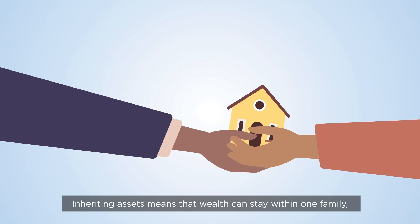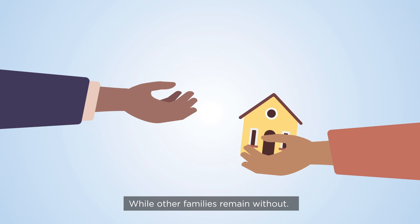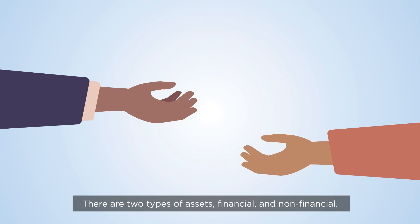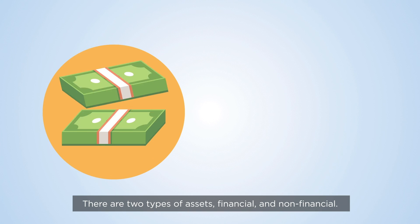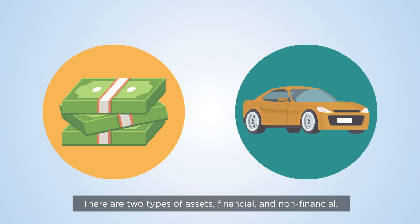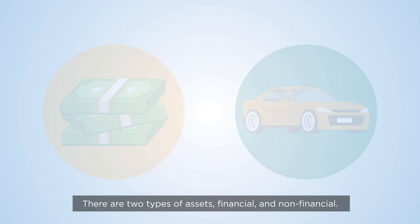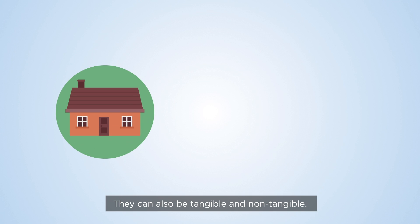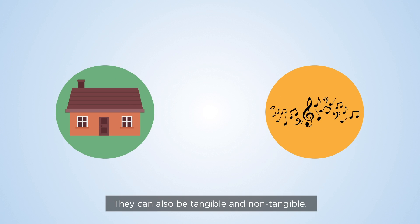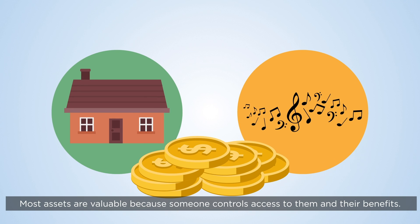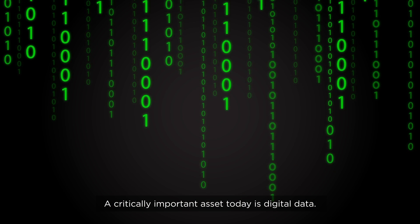Inheriting assets means that wealth can stay within one family while other families remain without. There are two types of assets: financial and non-financial. They can also be tangible and non-tangible. Most assets are valuable because someone controls access to them and their benefits.